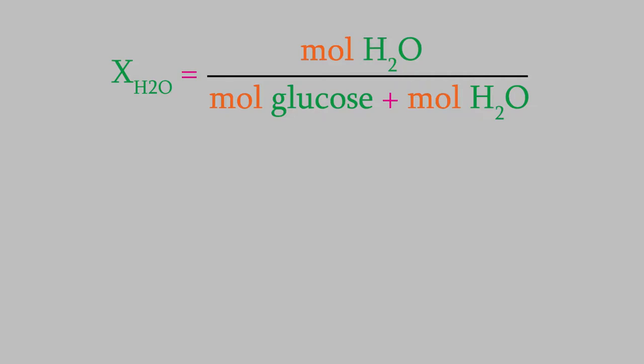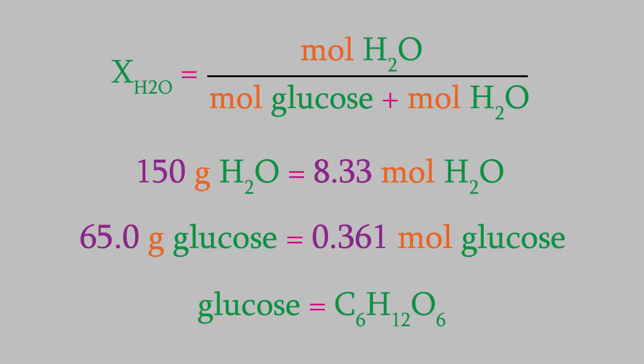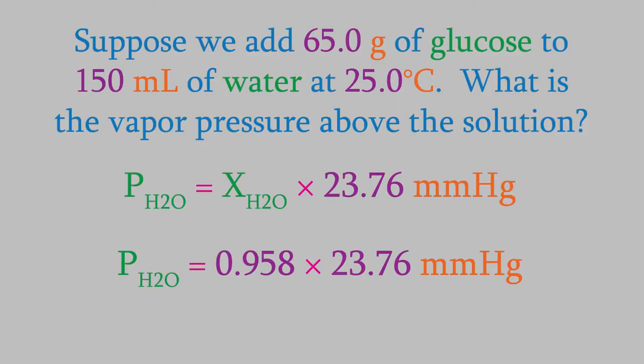So we have 150 milliliters of water. Since the density of water is about 1 gram per milliliter, this is 150 grams. Using the periodic table, we find out that that's equal to 8.33 moles. Meanwhile, we have 65.0 grams of glucose, which has the formula C6H12O6. Using the periodic table, we find out that that's 0.361 moles. If we plug these into our formula for the mole fraction, we get 0.958. Now we can use that in our equation for the vapor pressure, and we get 22.77 millimeters of mercury for our vapor pressure. So that's the vapor pressure of the water above our solution. It's a little lower than it would have been for pure water.